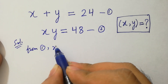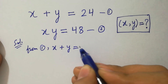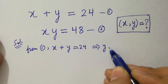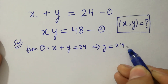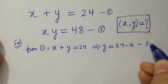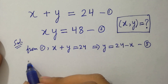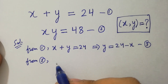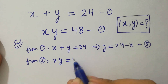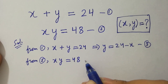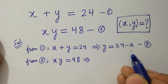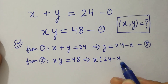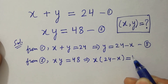From the first equation, x plus y equals 24, so y equals 24 minus x. Say this is the third equation. From the second equation, xy equals 48. Put the value of y: x times (24 minus x) equals 48.